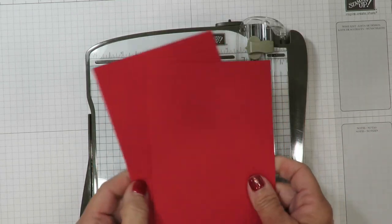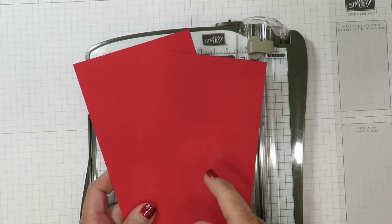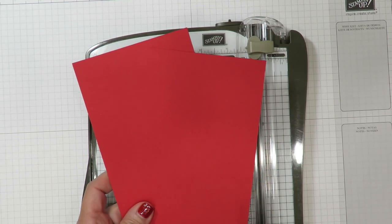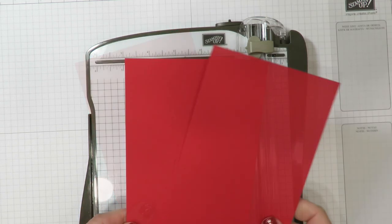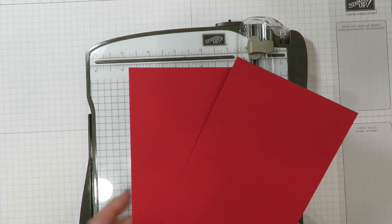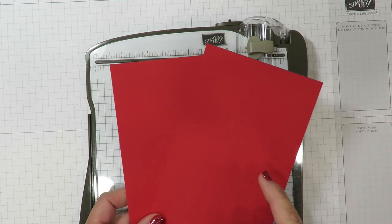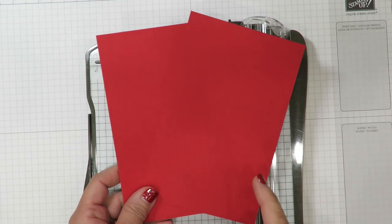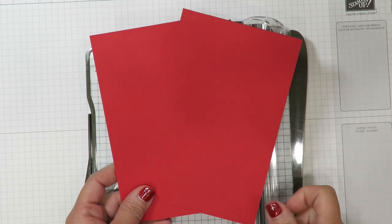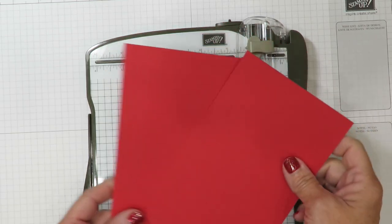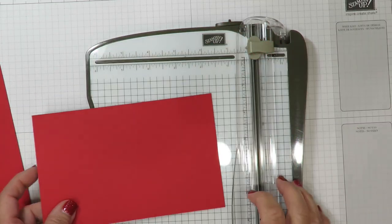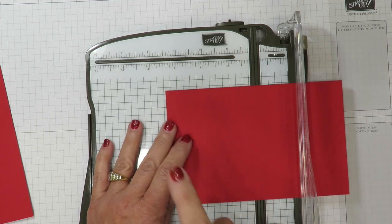Let's get started on putting this together. I'm going to be using my Stampin' Trimmer and we're going to do a little bit of scoring. Stick with me to the end of the video, I've got a couple other samples to share with you. I've cut two pieces of real red cardstock at four and a quarter by six and three quarters.